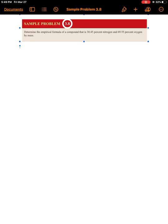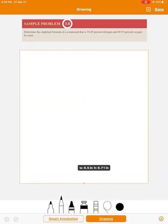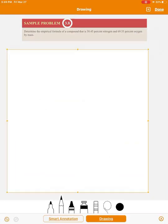Sample problem 3.8. Determine the empirical formula of a compound that is 30.45% nitrogen and 69.55% oxygen. So it's an empirical formula problem.